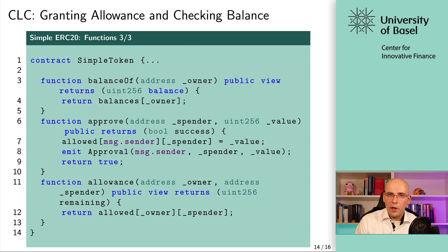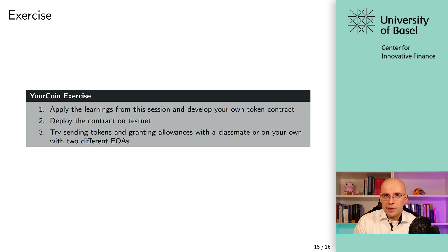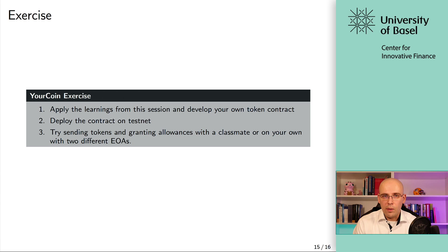The allowance function takes an owner address and a spender address as arguments, is a public view function, and returns a uint256 called remaining. It simply returns allowed[owner][spender], showing what the spender can still spend on behalf of the owner. Now let's look at the exercises: try to implement the contract just with the specification in your own way. Then deploy the contract on testnet, and try sending tokens and granting allowances with a classmate or on your own using two different externally owned accounts in MetaMask.